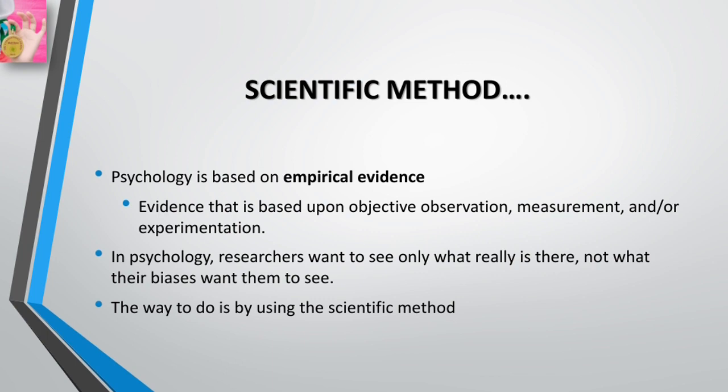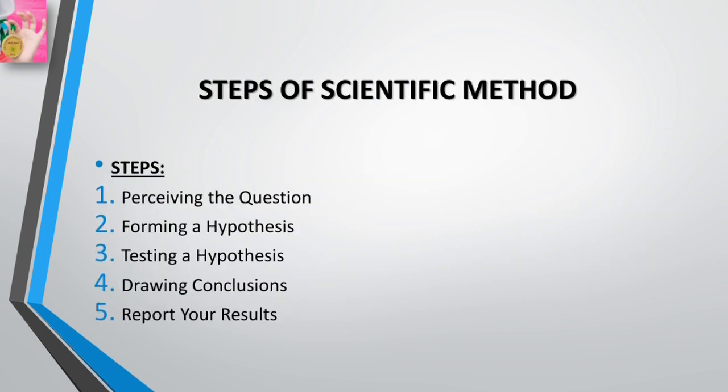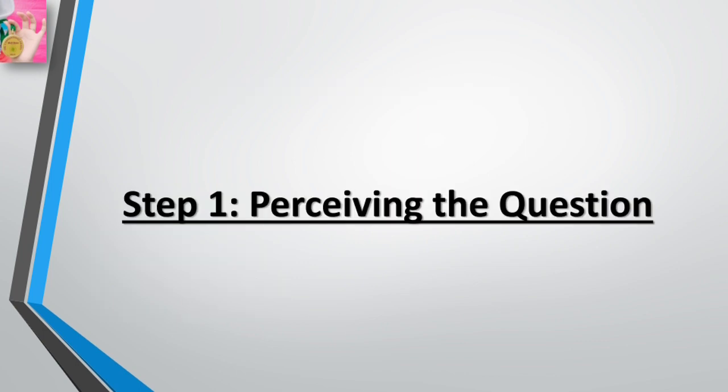The types of steps in the scientific method include: perceiving the question, forming a hypothesis, testing the hypothesis, drawing conclusions, and reporting your results. These are the five steps of the scientific method. The first step is perceiving the question.